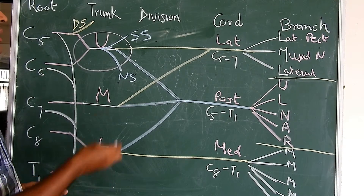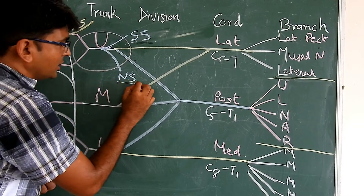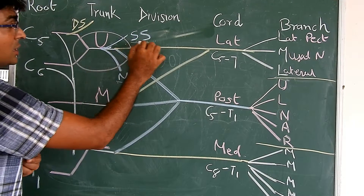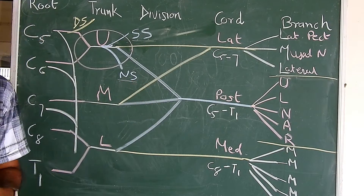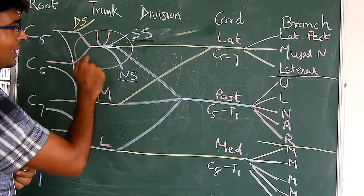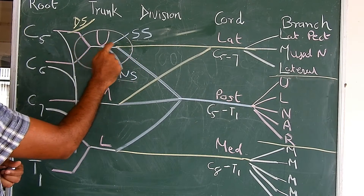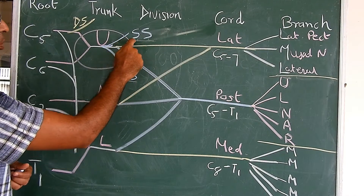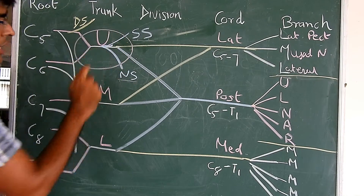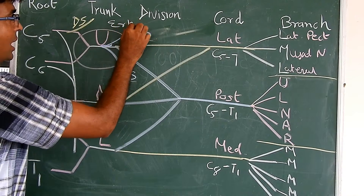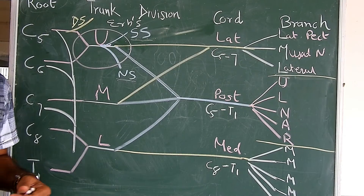The branches of the upper trunk are two: the suprascapular nerve and the nerve to subclavius. The suprascapular nerve supplies the supraspinatus and infraspinatus. The nerve to subclavius supplies the subclavius muscle. The point where C5 and C6 meet — after the anterior division, posterior division, suprascapular nerve, and nerve to subclavius — is known as Erb's point. Any paralysis occurring after this point is known as Erb's paralysis.